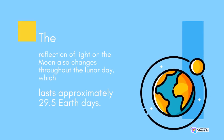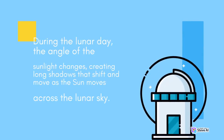The reflection of light on the Moon also changes throughout the lunar day, which lasts approximately 29.5 Earth days. During the lunar day, the angle of the sunlight changes, creating long shadows that shift and move as the Sun moves across the lunar sky.